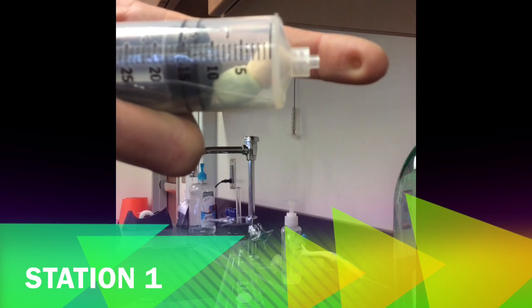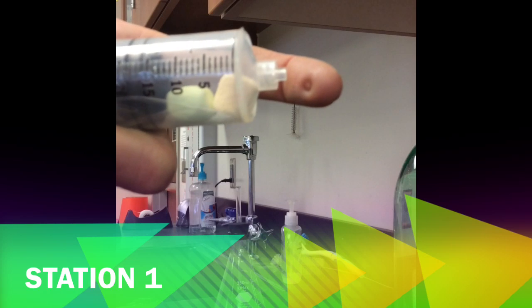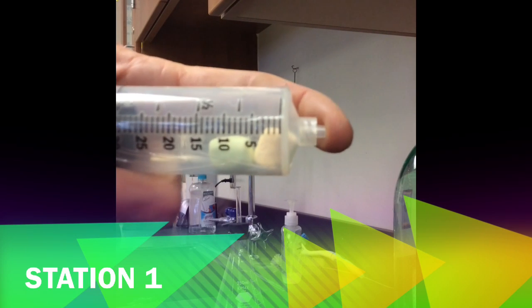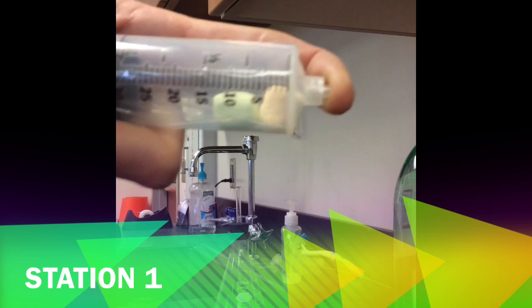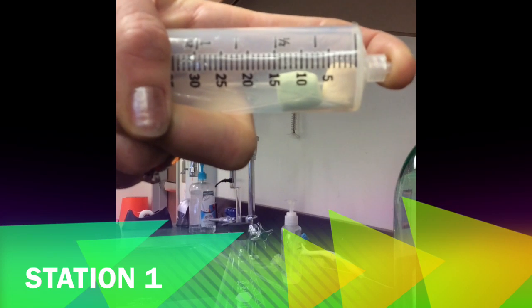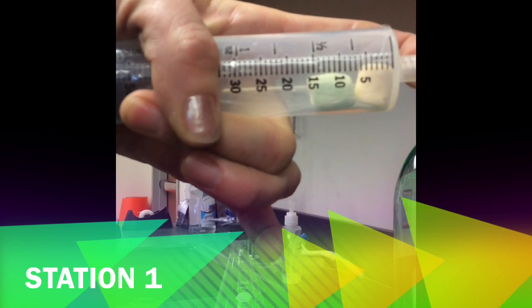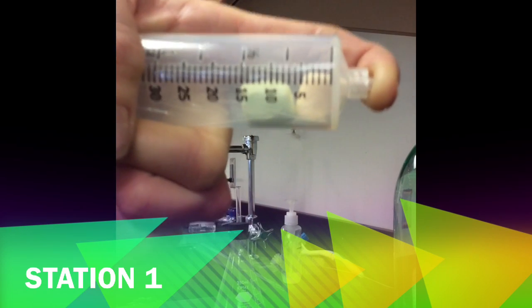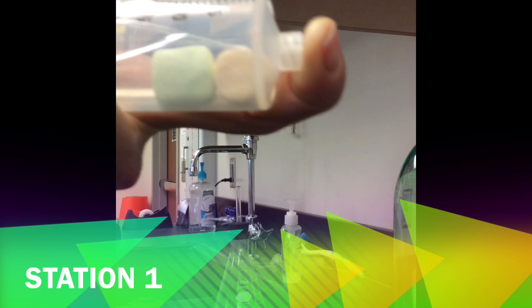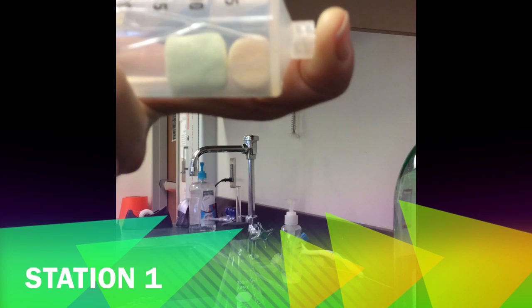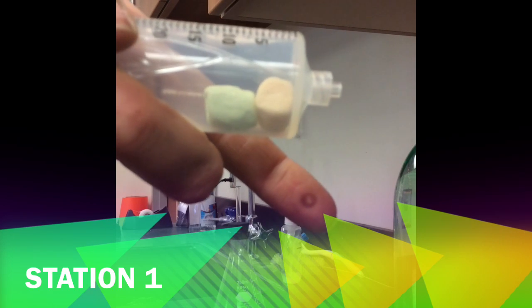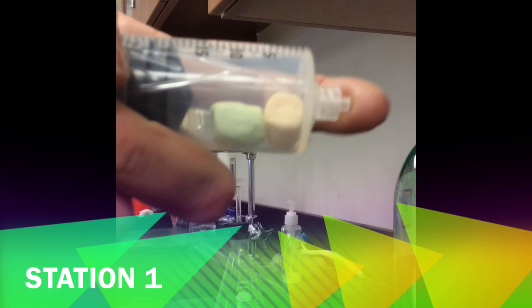When I let the air back in they actually reinflate a little bit. So if I go back to the 30 milliliter mark and this time I pull back on the plunger, I'm going all the way back to the 60 milliliter mark at the end of my syringe, and you should be able to tell that those marshmallows got a little larger.